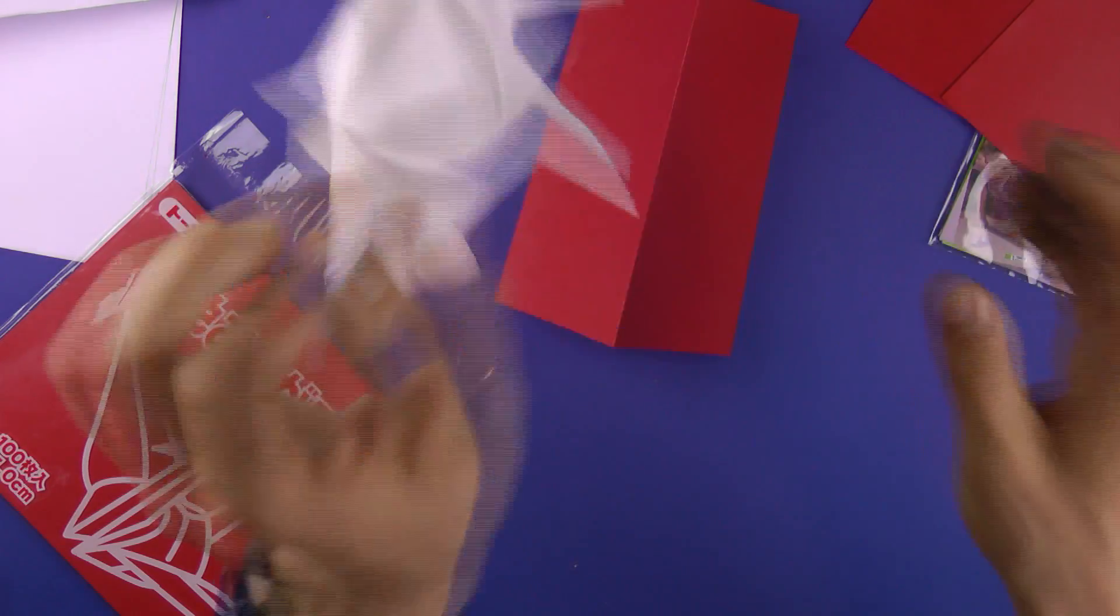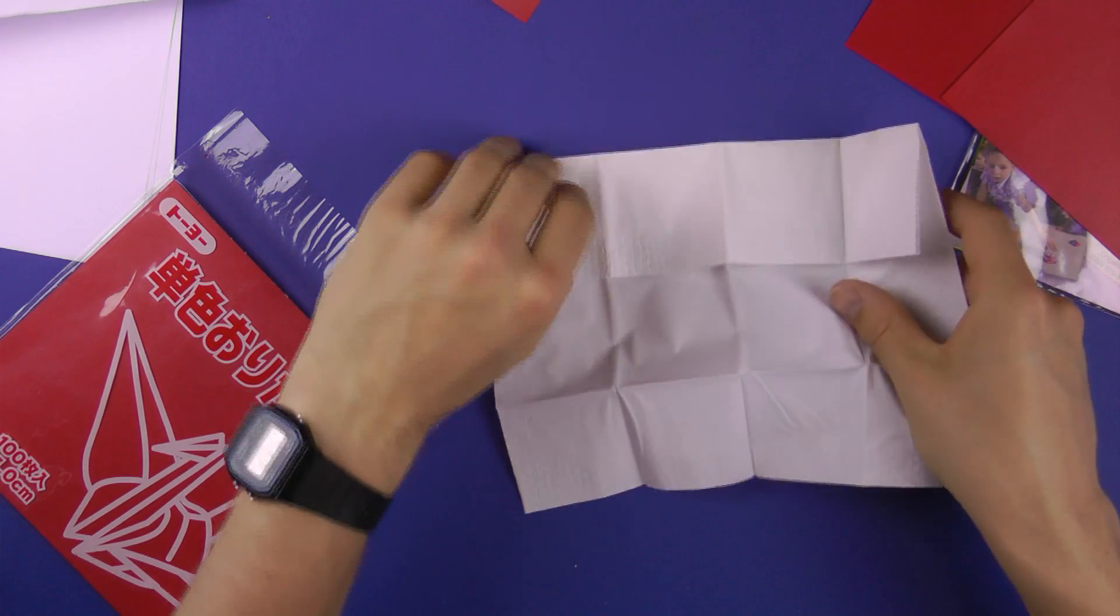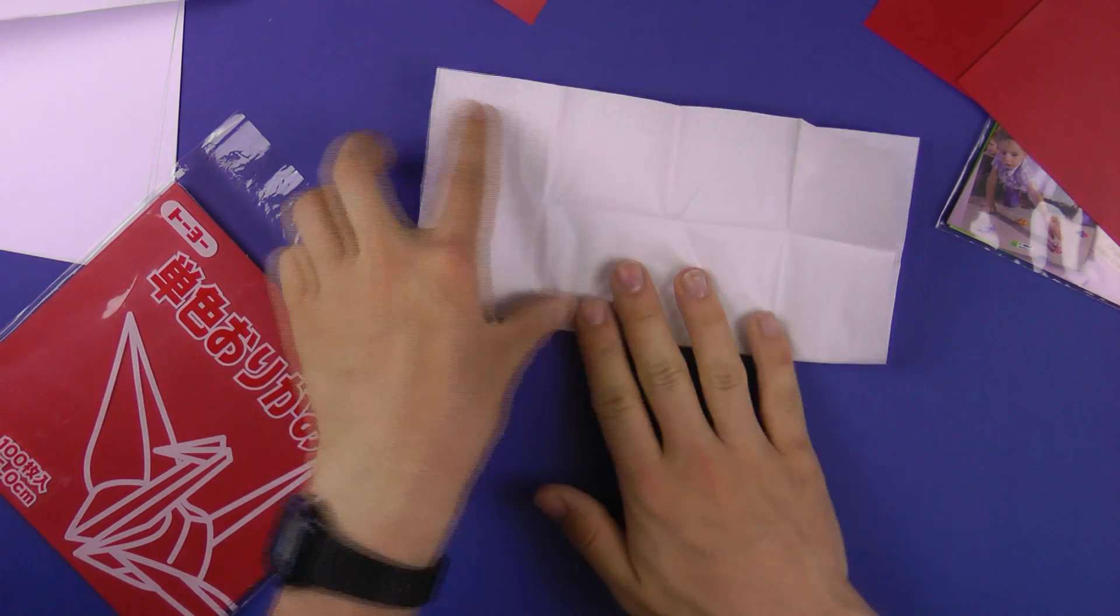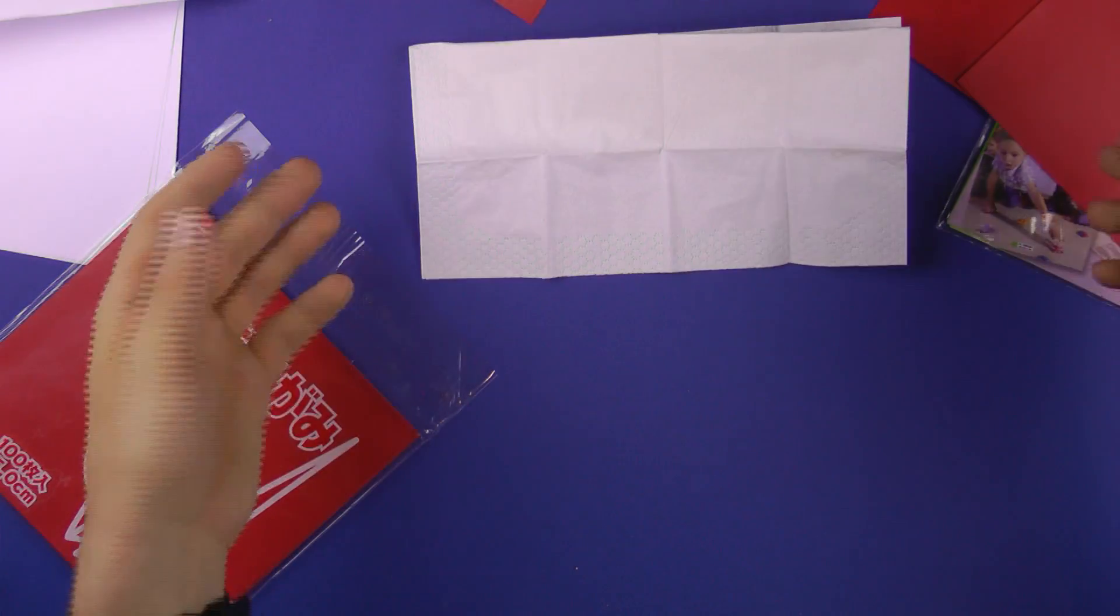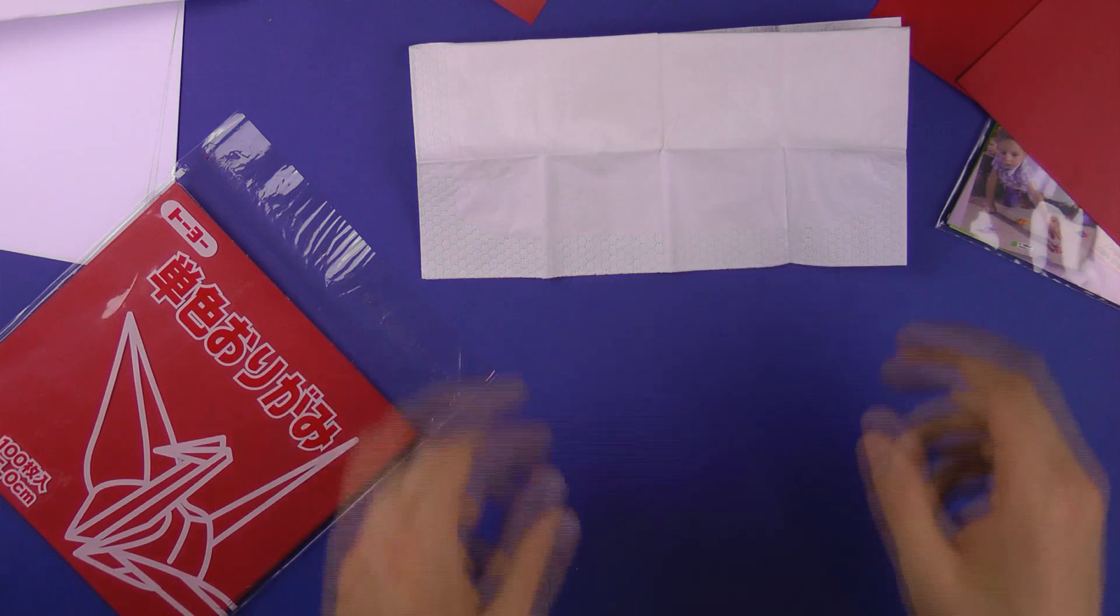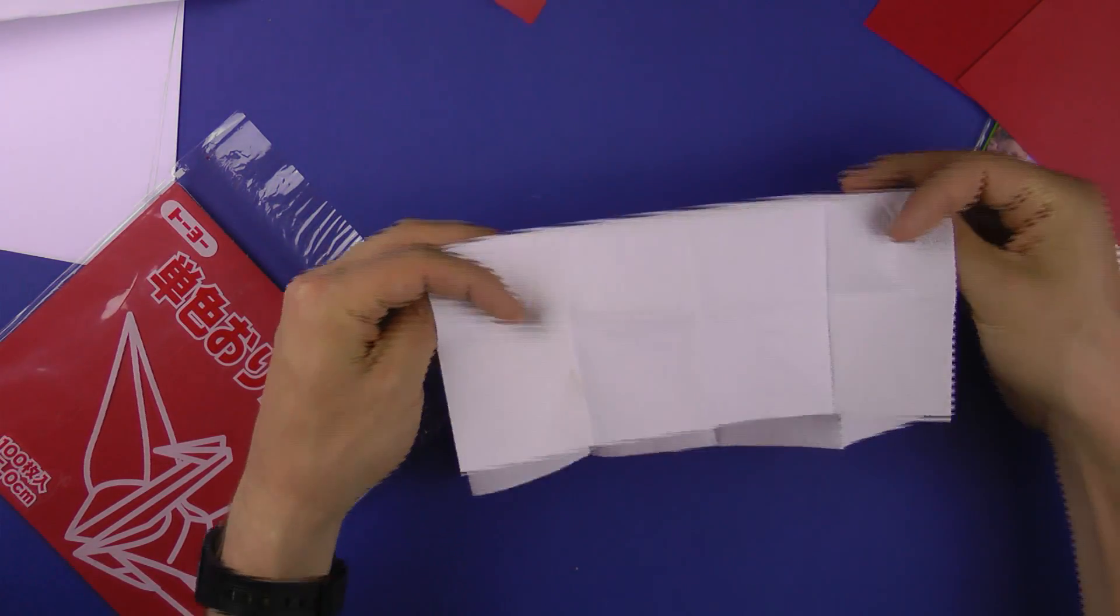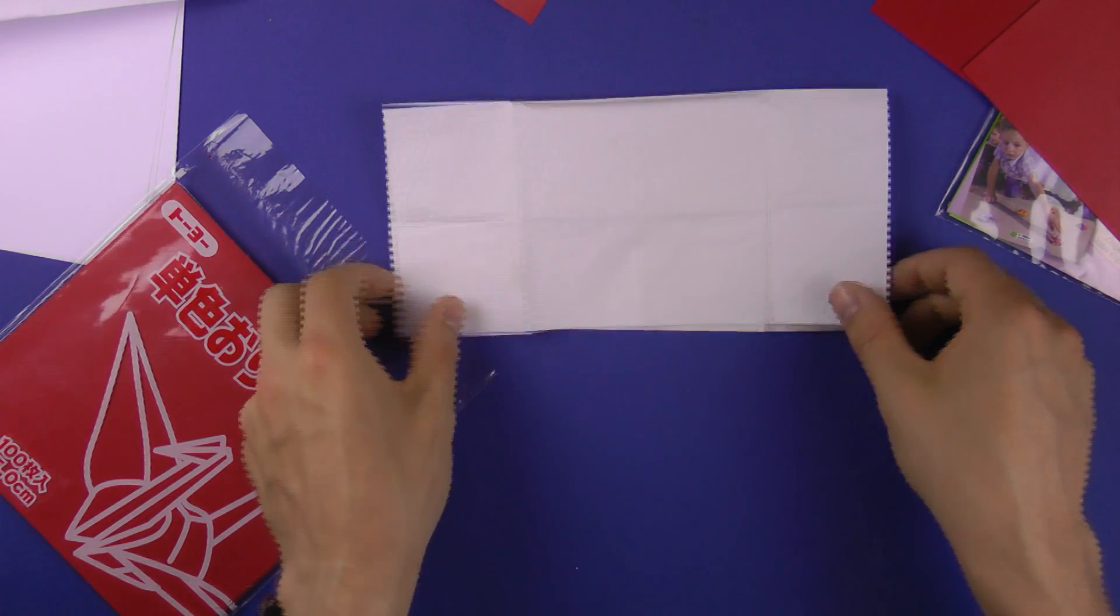For example this tissue here is not good for folding because let's fold it in half like this and try to make the roof. You see not much of a roof there. So it can't hold the crease well and the same goes for toilet paper or other tissues mostly. They are more difficult to fold.